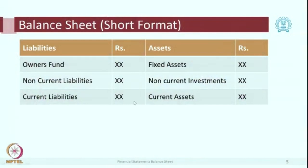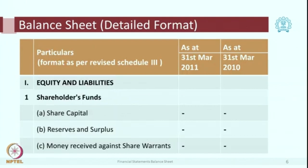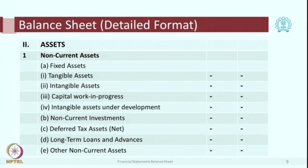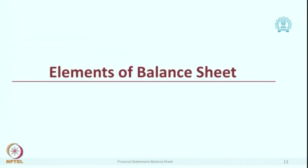We will take a quick review of the balance sheet. You already know the short-form format — there are 6 items — and then we will discuss each of them in detail. We had also seen a detailed format of balance sheet under Schedule 3 of the Companies Act. So we have equities and liabilities, then shareholders' funds, share capital, reserves and surplus. Then money received against share warrants, share application money pending allotment, non-current liabilities, and current liabilities.